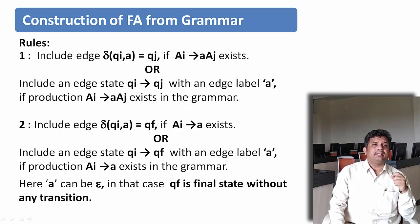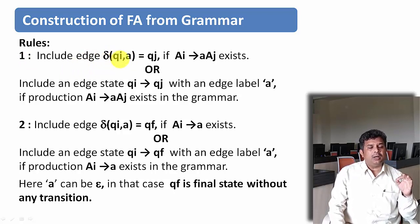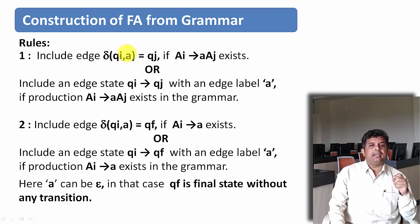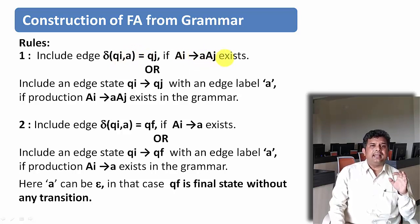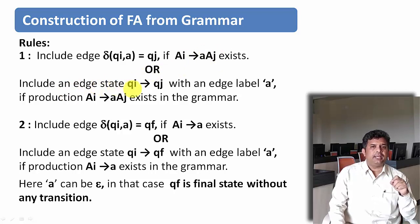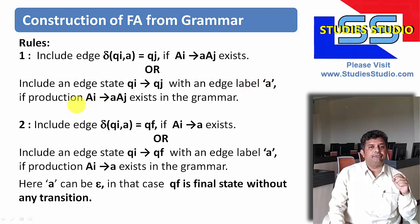So let us see what are the rules that we are having. The first rule is: we will include an edge for transition QI on input symbol A when it goes to QJ. This edge will be included if in the grammar we are having AI derives A AJ. Or in other words, include an edge from QI to QJ with edge label A, if the production is of the form AI derives A AJ.